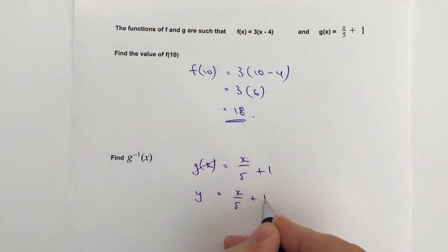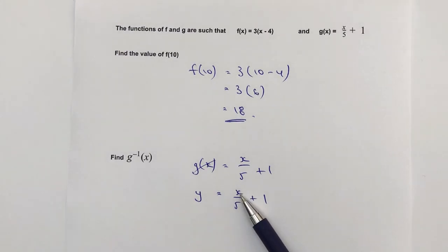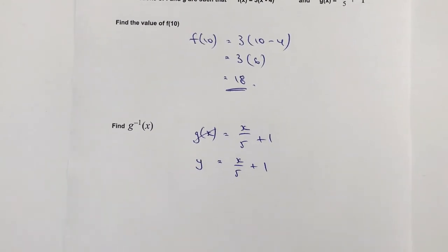Then what I'm going to do is I'm going to make x the subject of this particular formula. So the way I need to do that is I need to manipulate this equation in order to get x on its own and everything else on the other side of the equal sign.